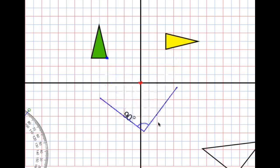So right now, the yellow triangle has been rotated 90 degrees in a clockwise fashion using the origin, or about the origin.